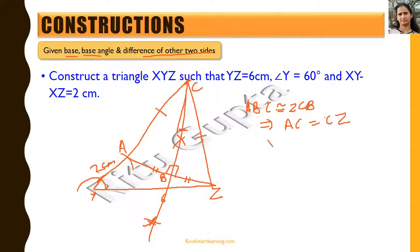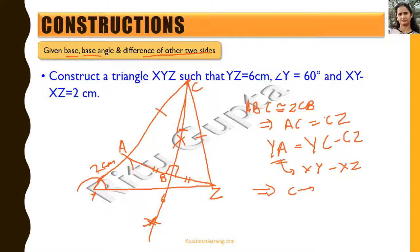From this congruency, AC equals CZ. Therefore YA equals YC minus CZ, which equals XY minus XZ — the given difference. So point C corresponds to point X, giving us the triangle XYZ with the required difference of sides.